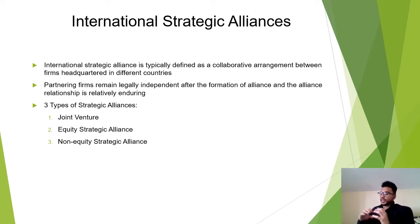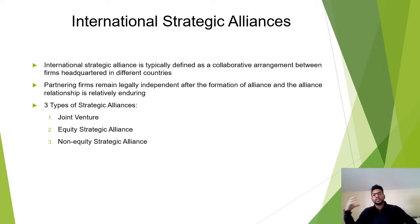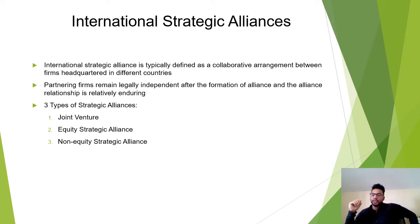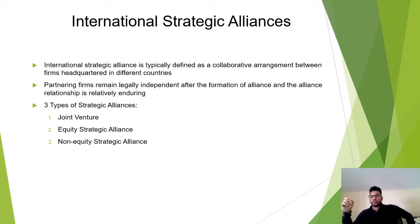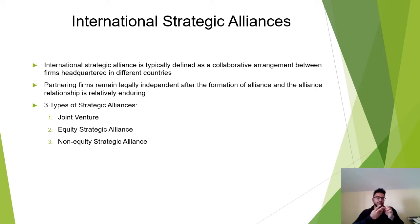Partnering firms remain legally independent after the formation of an alliance — it's not a merger or acquisition, just an alliance where they work together. For example, at my company we have a strategic alliance with a major industry player: we manufacture their equipment and don't manufacture for their competitors. The three types of strategic alliances are joint venture, equity strategic alliance, and non-equity strategic alliance.